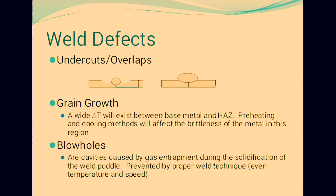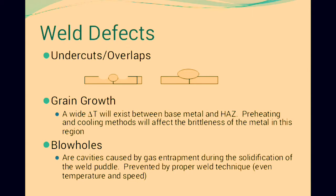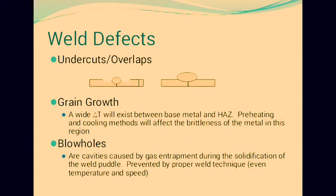Grain growth is a defect where the HAZ (heat affected zone) between the base metal is affected by preheating and cooling methods, which will affect the brittleness of the metal in this region. If you are welding, grain growth increases the number of grains.